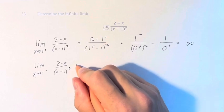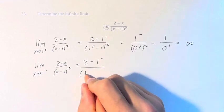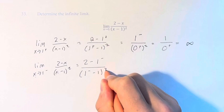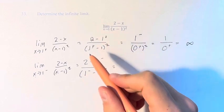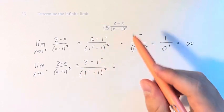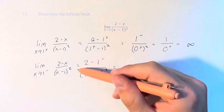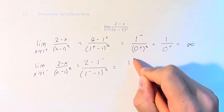Here we have 2 minus 1 from the left over 1 from the left minus 1 squared. 2 minus 1 from the left, again we're subtracting this number so it flips. 2 minus 1 is 1 from the right.